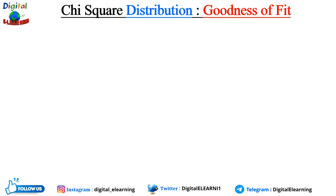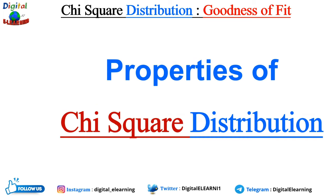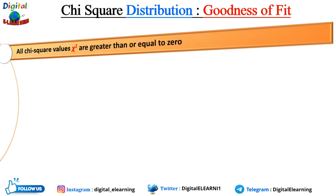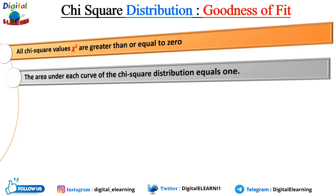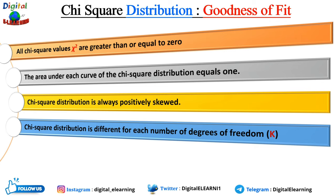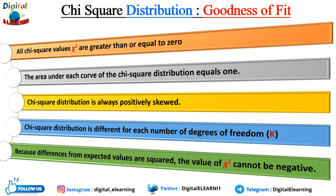Before the numerical examples, here are some key properties of chi-square distribution. All chi-square values are greater than or equal to zero. The area under each chi-square distribution curve is always equal to one. The chi-square distribution is always positively skewed and is different for each degree of freedom. Because the differences from expected values are squared, chi-square values cannot be negative.